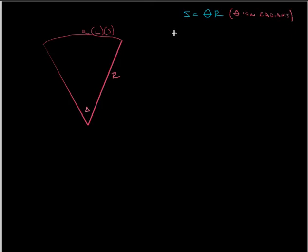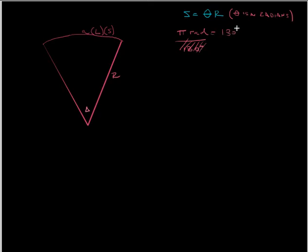To get from radians to degrees, there's pi radians in 180 degrees. Pi radians is equal to 180 degrees. Let me put this in surveying terms.